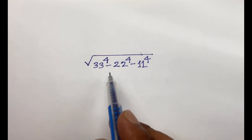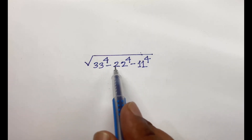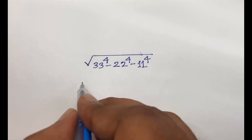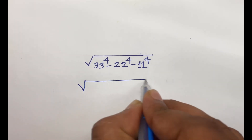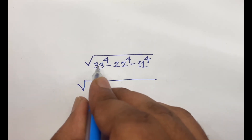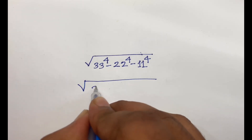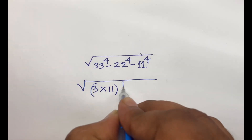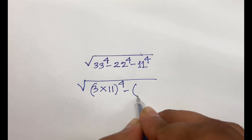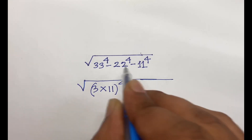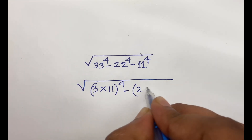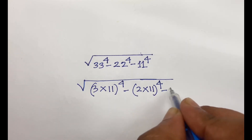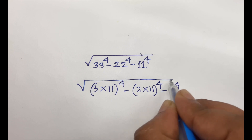How to solve square root of 33 to the power 4 minus 22 to the power 4 minus 11 to the power 4? Here, 33 can be written as 3 times 11, bracket to the power 4, and 22 as 2 times 11, bracket to the power 4, minus 11 to the power 4.